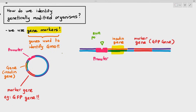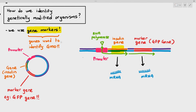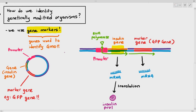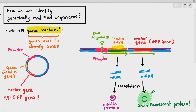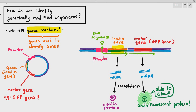If the RNA polymerase attaches to the promoter, it is able to move along the plasmid, express the insulin gene to produce the mRNA, and also express the marker gene to produce a different mRNA. So two mRNAs are produced. If the first mRNA undergoes translation, it produces the insulin protein, and if the second mRNA gets translated in the ribosome, it produces the GFP — the green fluorescent protein. This green fluorescent protein is able to glow. How does that help us identify genetically modified organisms?